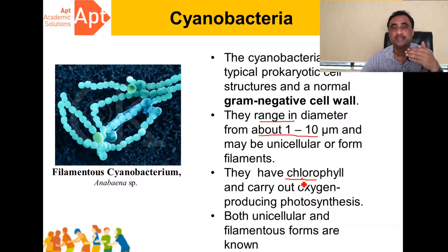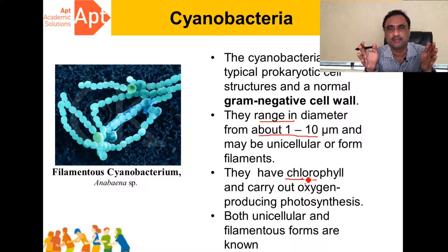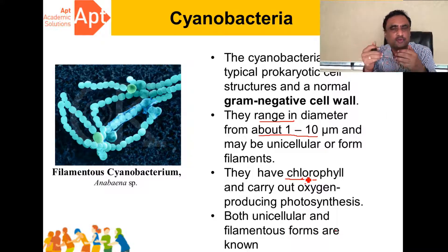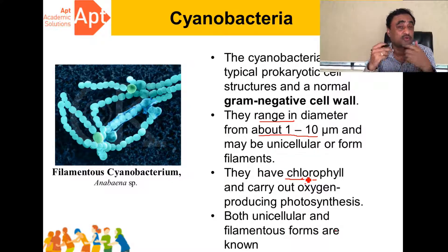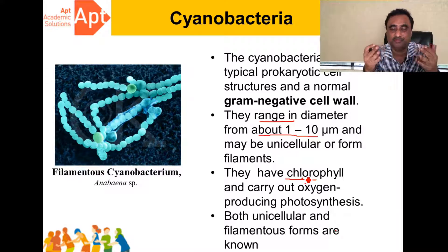In oxygenic photosynthesis, oxygen is evolved during the process. There are two types of bacteria as far as photosynthesis is concerned: one in which oxygen is not evolved, and another — cyanobacteria — in which oxygen is actually evolved.